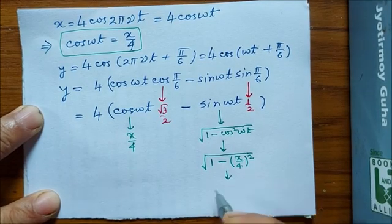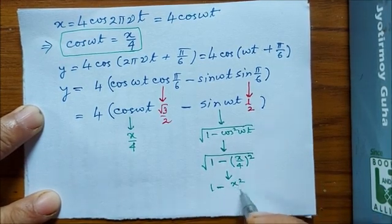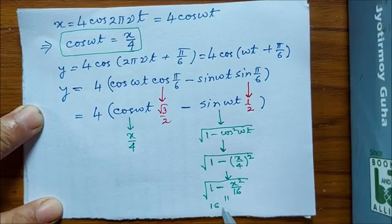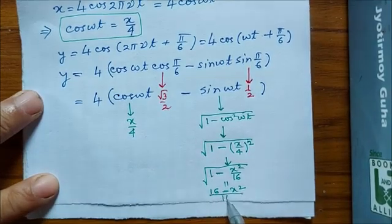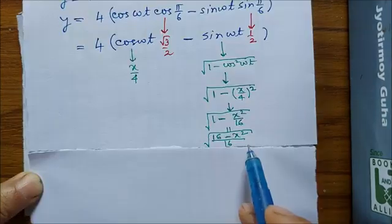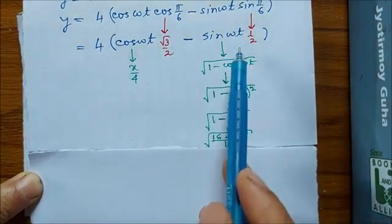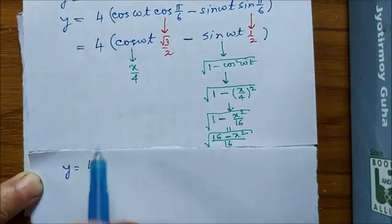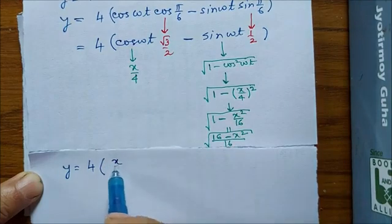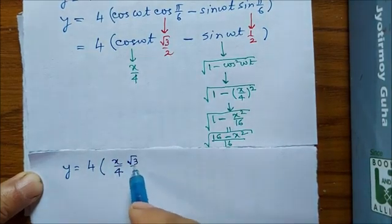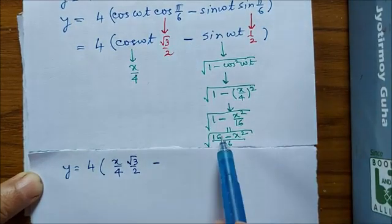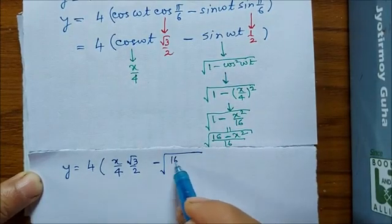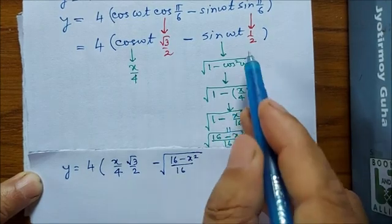So it is 1 minus x by 4 whole square, which is equal to (16 - x²) by 16 whole under root. Let us pick the terms correctly and rewrite this equation. So y equal to 4, instead of cos ωt we will write x by 4, and then we have √3 by 2, minus the under root term, and finally we have a half.